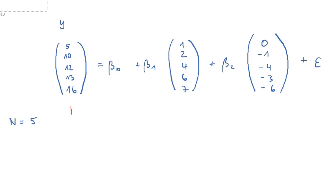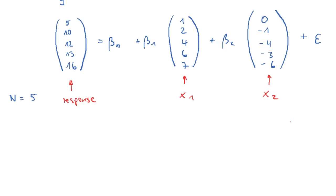So what do we have here? This thing here is the response variable. This one here is the first explanatory variable in the model. And this thing here is the second explanatory variable. Now we can write this equivalently as Y equals beta0, beta1 times the matrix of explanatory variables, which is 1, 2, 4, 6 and 7 and 0, minus 1, minus 4, minus 3, minus 6, plus the residuals.